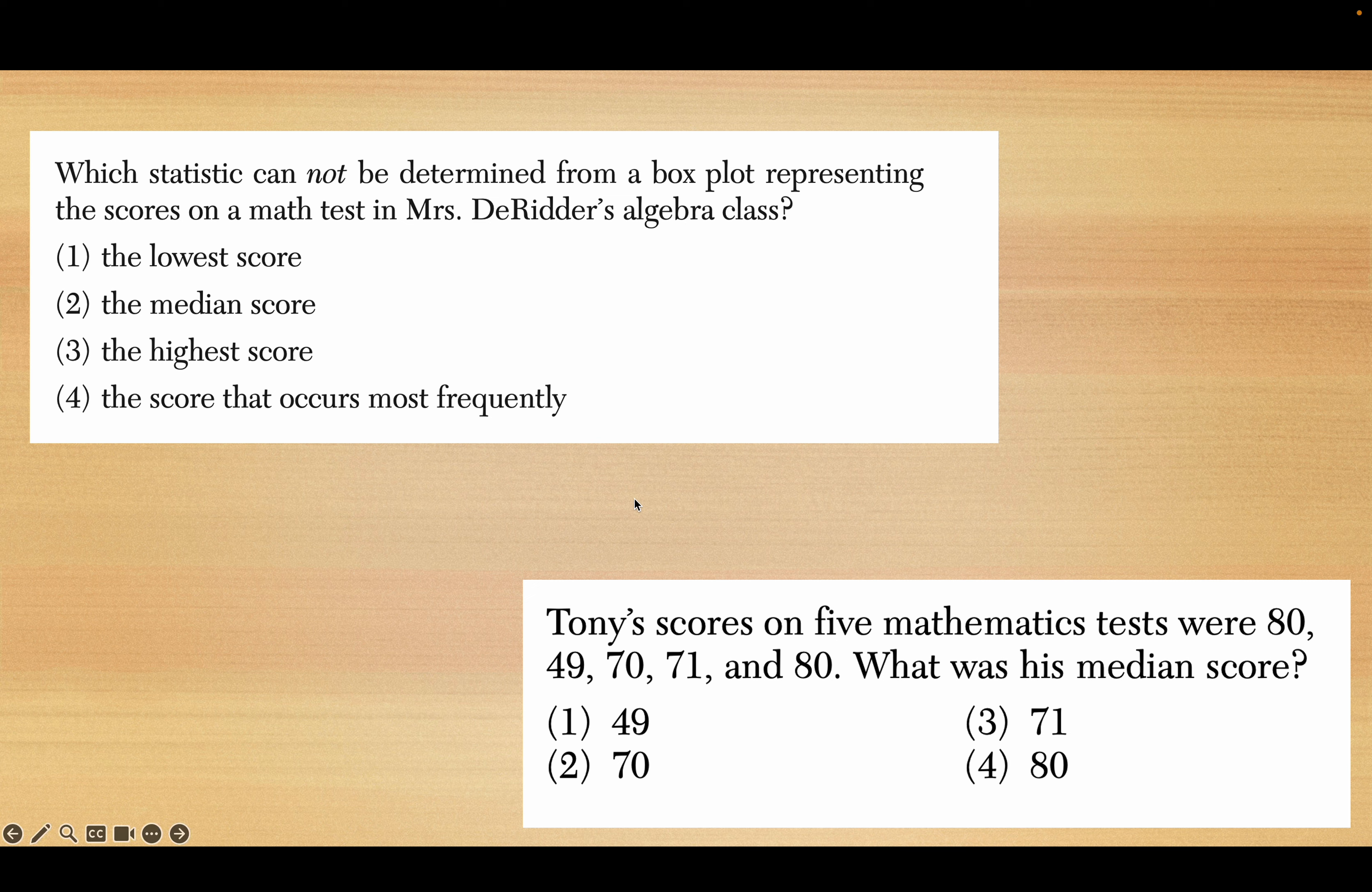On the first one, which statistic cannot be determined from a box plot? It would be the scores that occur most frequently. The reason is straightforward - there's nothing about the mode in a box plot. The lowest score is the minimum, the median score is the middle of the box, the highest score is the maximum. The mode is not part of that.